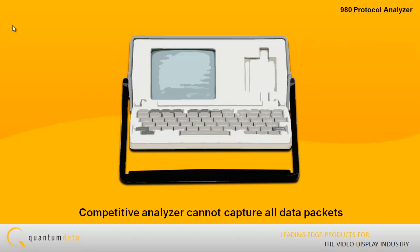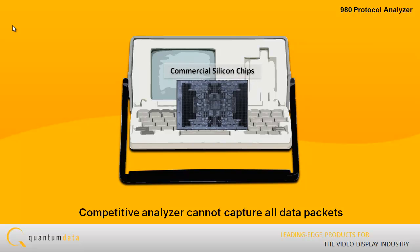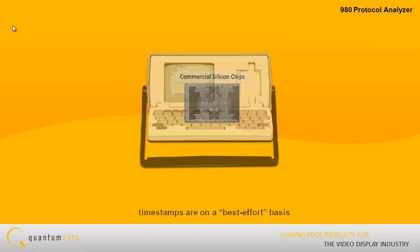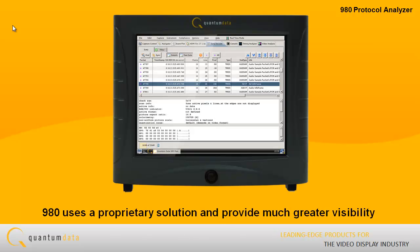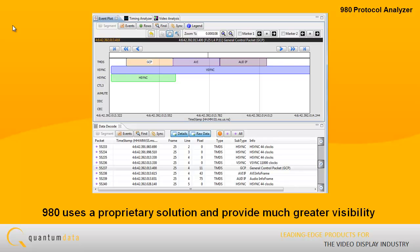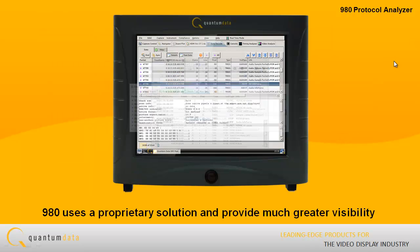Competitive analyzers are more limited because they utilize commercial silicon chips. Therefore, they cannot capture all data packets, and the timestamps they assign to packets are on a best effort basis. The 980 uses a proprietary solution and therefore can provide greater visibility, ensuring that all packets are captured and precise timestamps are assigned.